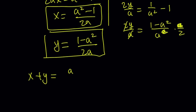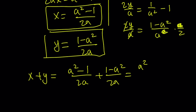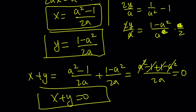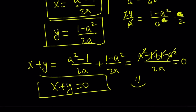We got the values of x and y in terms of the parameter A. We're looking for x plus y, so let's add them: (A squared minus 1) over 2A plus (1 minus A squared) over 2A. They have the same denominator, so we just add the numerators — and everything in the numerator cancels out, leaving us with 0. So x plus y equals 0, as before. This brings us to the end of the video. Thank you for watching. Please comment, like, and subscribe. I'll see you tomorrow with another video. Until then, be safe, take care, and bye-bye.